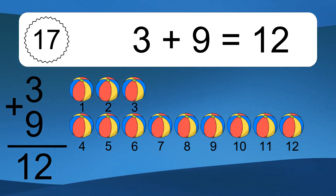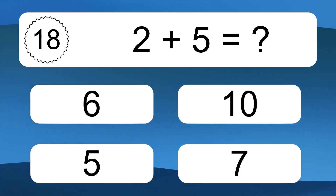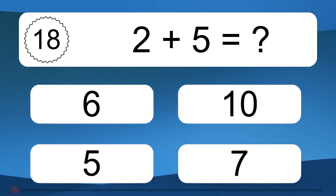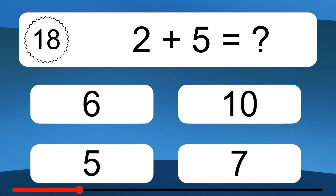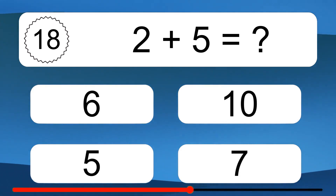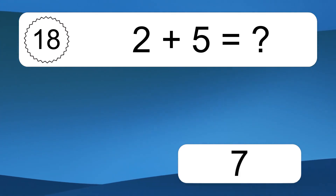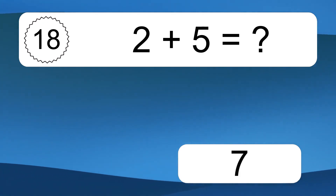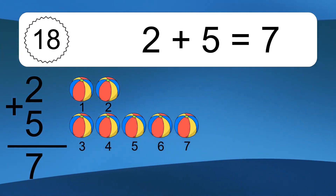2 plus 5 equals what? 2 plus 5 equals 7.